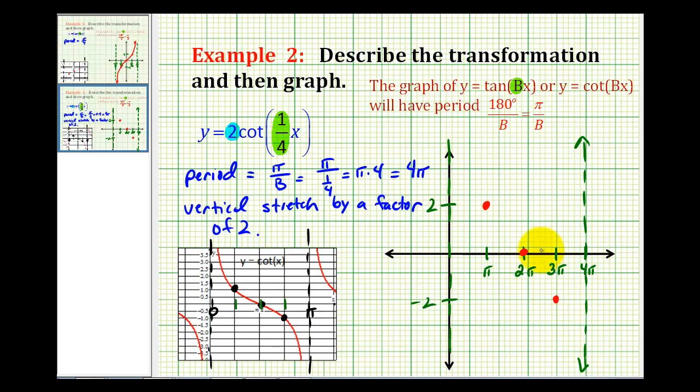And now we have all the information we need. Our graph is going to pass through these three points, and then approach the vertical asymptotes. So it might look something like this.